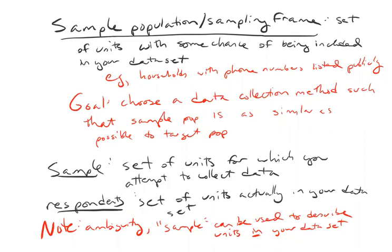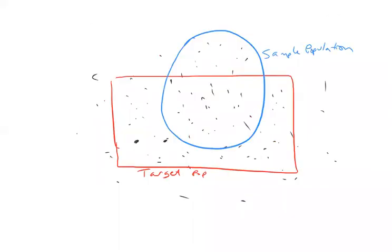Let me go back to the picture and add to it. By definition, my sample has to be part of my sample population, because the sample population is the set of all units that have some chance of ending up in my study. Note that it's totally possible your sample will include people who are not in the target — I might reach out to people in front of the Science Center who are not actually Wellesley students. And then your respondents are a subset of the sample.